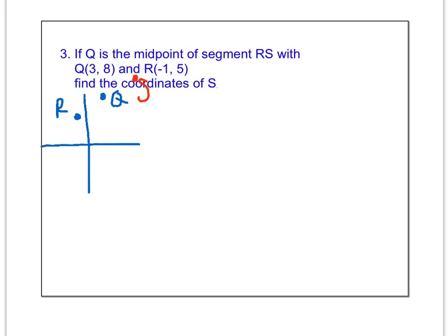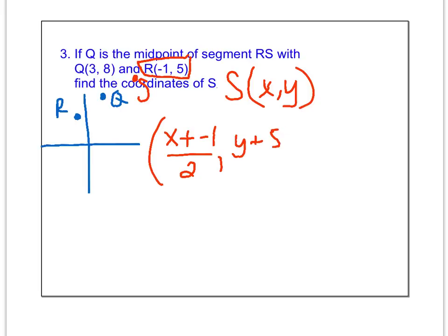I want to find the coordinates for S, which I'm going to call XY. What I'm going to do is use the midpoint formula using the ordered pair for S and the ordered pair for R. So X plus negative 1 over 2, comma, Y plus 5 over 2. And that has to equal the midpoint, which they've told us is Q, the point 3, 8.